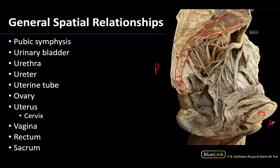Starting anteriorly, just behind the pubic symphysis is the urinary bladder right here, and you can even see a little bit of the relatively short urethra extending inferiorly from the bladder region. Just posterior to the bladder is the uterus. Of the three major visceral structures in this region, the uterus is always going to be intermediate. Right here we are looking at the body of the uterus, and we'll come back to this in a bit more detail in a moment.